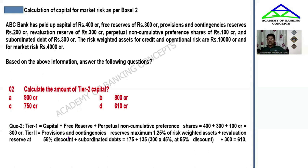Revaluation reserves are taken at a 55% discount, meaning only 45% is counted. So 300 crores at 45% equals 135 crores. Plus subordinated debt of 300 crores. Adding these together: 175 plus 135 plus 300 gives the total Tier 2 capital. Please verify this calculation and proceed to confirm the Tier 2 capital figure.